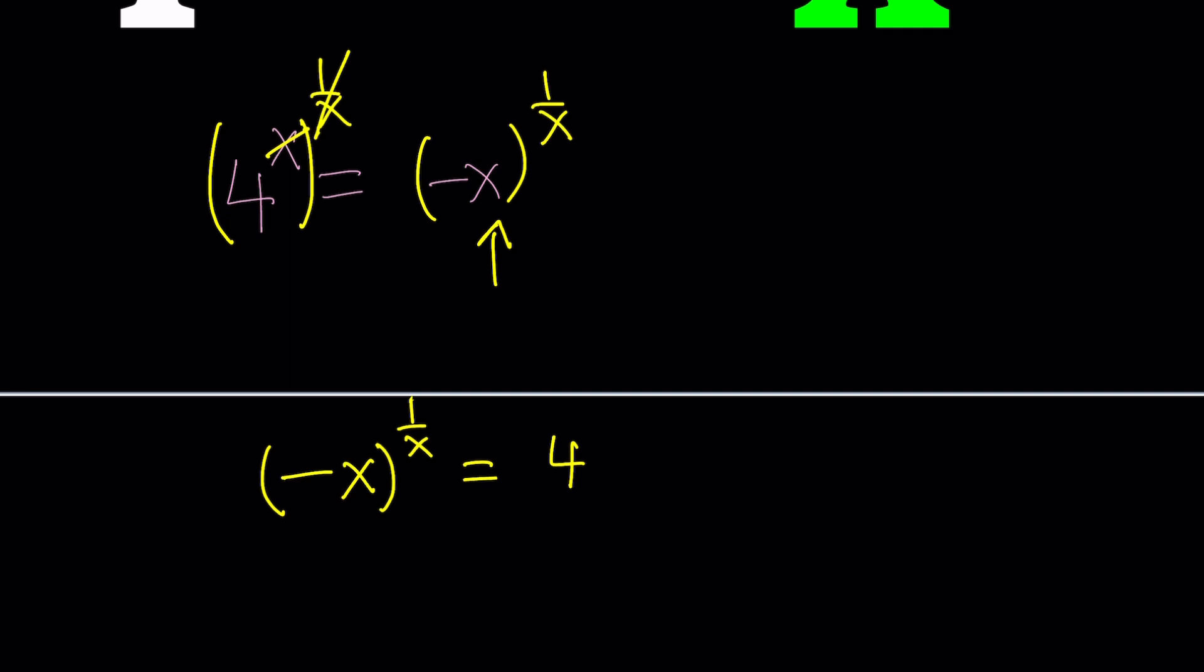First of all, one thing to consider in this scenario is, since we're looking for real solutions, we have 4 to the x and negative x. Notice that 4 to the power x is always increasing. It's an exponential function. And negative x has a negative slope. Therefore, it's always decreasing. So that means they should have one intersection point.